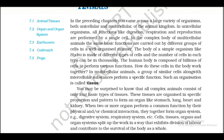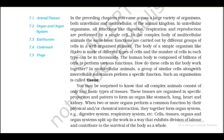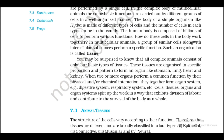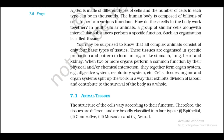The human body is composed of billions of cells to perform various functions. How do these cells in the body work together? In multicellular animals, a group of similar cells along with intercellular substances perform a specific function. Such an organization is called tissue. All complex animals consist of only four basic types of tissues. These tissues are organized in specific proportion and pattern to form organs like stomach, lung, heart, and kidney.